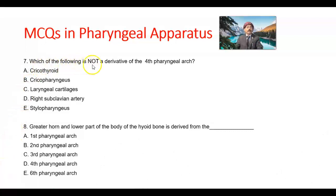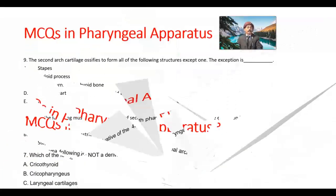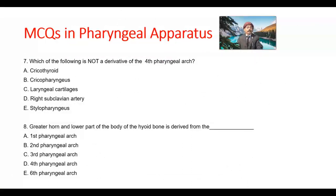Question number 7. Which of the following is not a derivative of the fourth pharyngeal arch? Options: cricothyroid, cricopharyngeus, laryngeal cartilage, right subliminary, stylopharyngeus. The answer is stylopharyngeus. This muscle is the only muscle developed from the third pharyngeal arch, not the fourth.